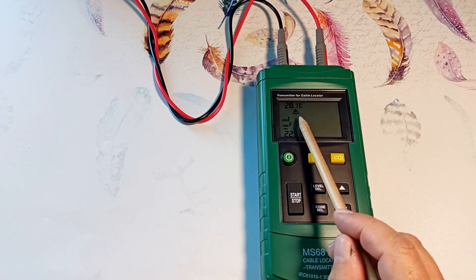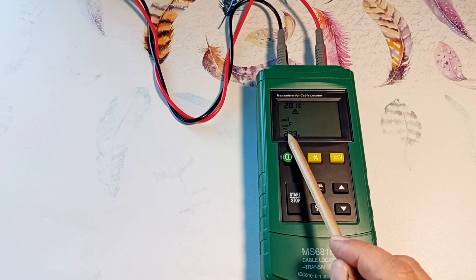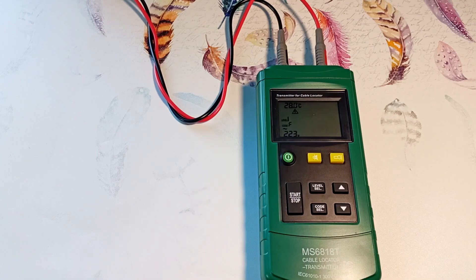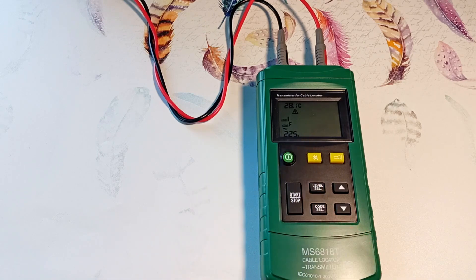We have a triangle displayed, indicating that the line is energized. The mains voltage is indicated here. And here the fact is that the current is alternating. If it is constant, then a minus sign will be displayed here. The mains voltage should not exceed 400 volts. The range of measured voltages is from 12 to 400 volts.